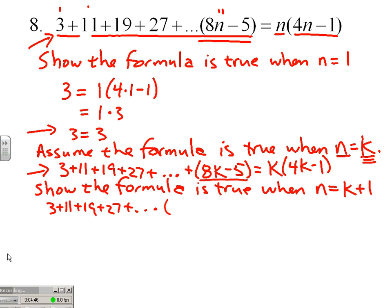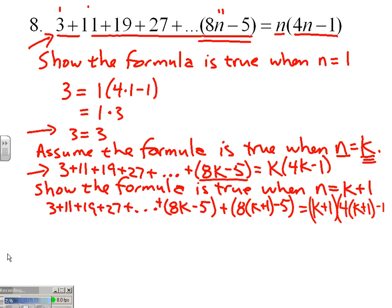Plus 8k minus 5, now my k plus first domino, 8 times k plus 1 minus 5. We want to show that that is equal to, put k plus 1 into the right side, and we get k plus 1 times 4 times k plus 1 minus 1.